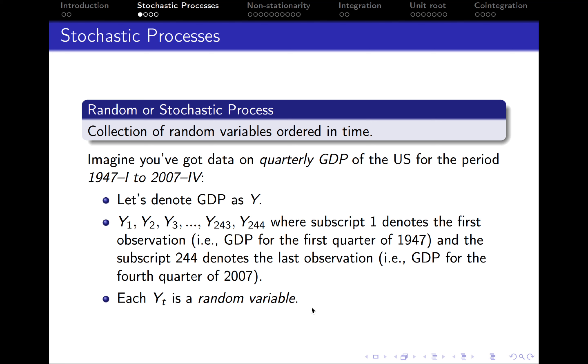Suppose we've got data on quarterly real GDP of the US for the period from the first quarter of 1947 to the fourth quarter of 2007. Let's denote GDP as Y. We have Y₁, Y₂, Y₃, all the way to Y₂₄₄, where subscript 1 denotes the first observation (GDP for the first quarter of 1947) and subscript 244 denotes the last observation (the fourth quarter of 2007).